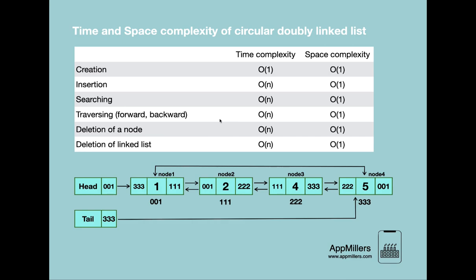The next operation is traversal. In a circular doubly linked list we can traverse in both ways — forward and backward. For both cases the time complexity is O(n) because we loop through each node: in forward traversal we loop from head to tail, and in backward traversal from tail to head. The space complexity is O(1) because we use only a temporary variable inside the loop.